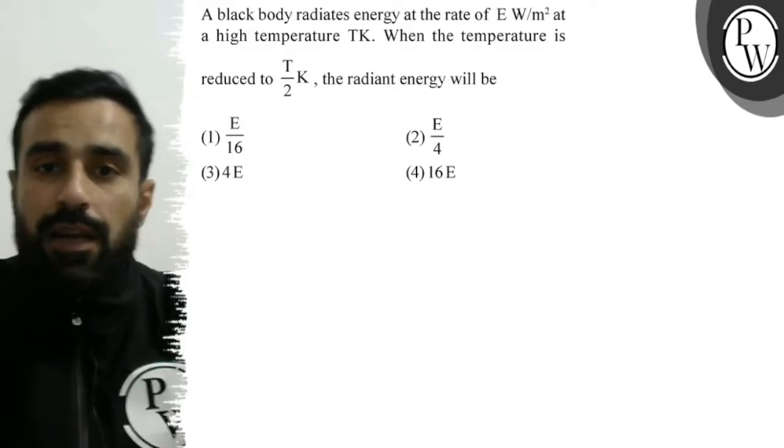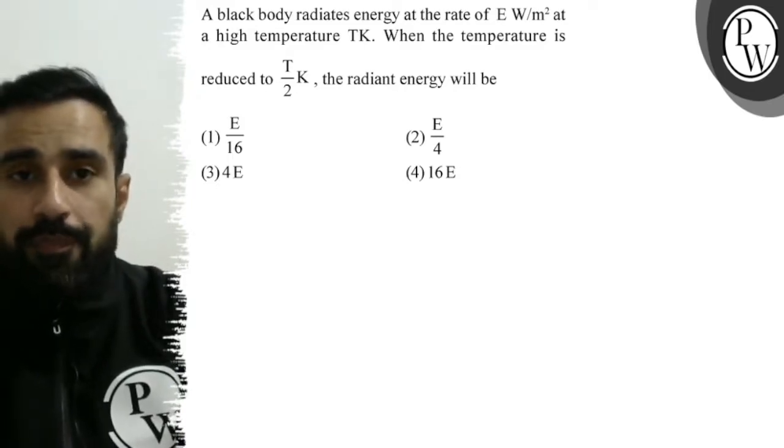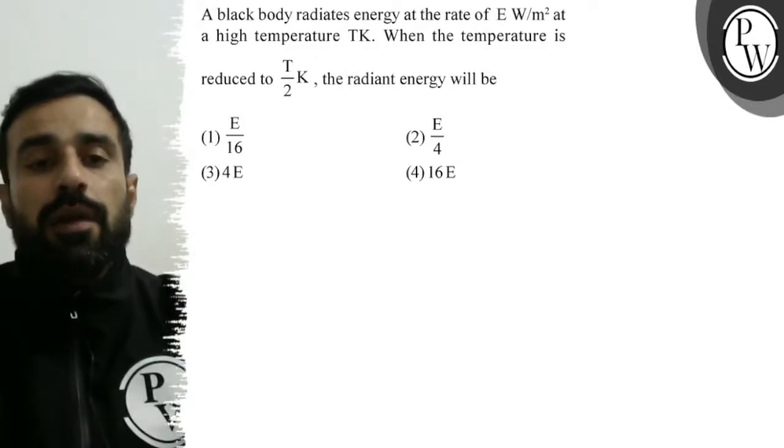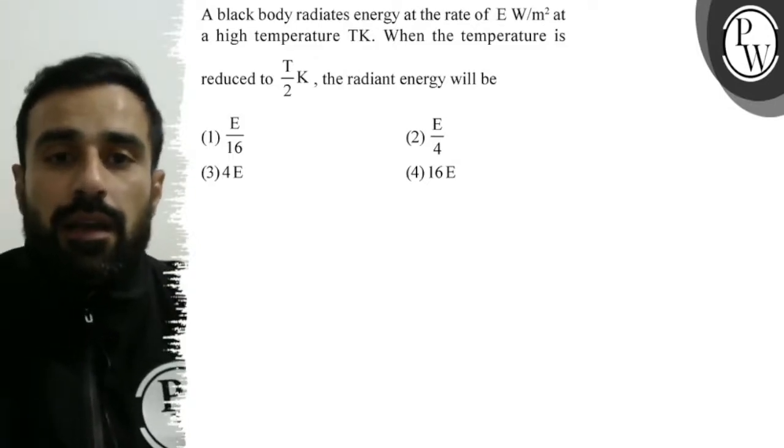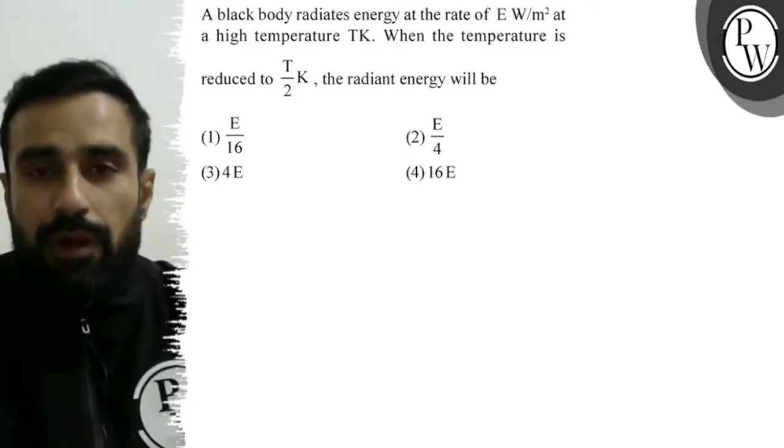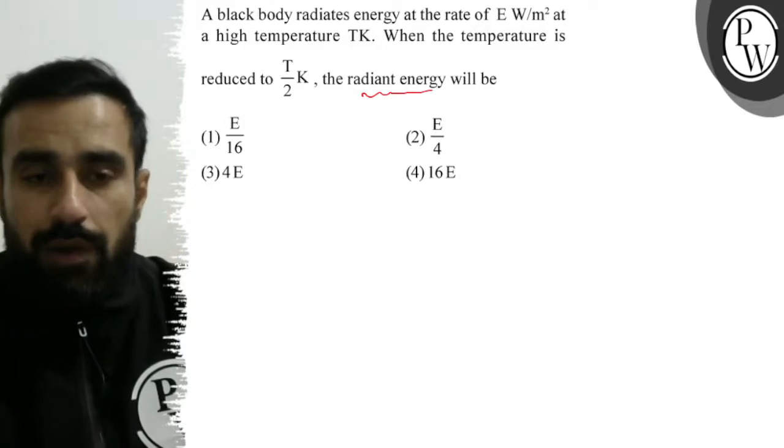A black body radiates energy at the rate of E watts per meter square at a high temperature T Kelvin. When the temperature is reduced to T by 2 Kelvin, then the radiant energy will be, that is, radiant power will be.